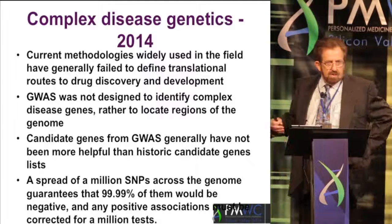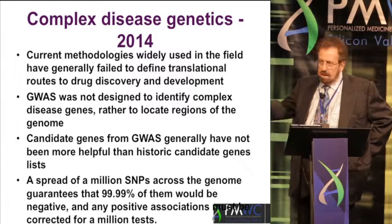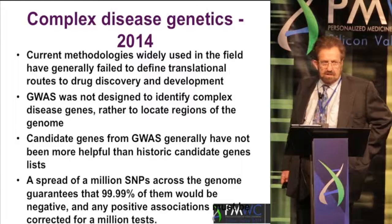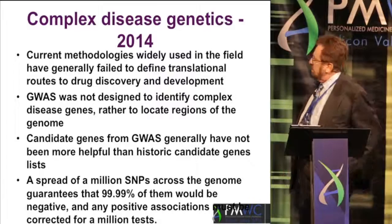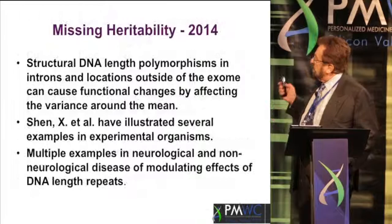People have used things like GWAS and a number of other approaches, and every week you read another 10, 15, 20 candidate genes that might be related based on statistical analysis of a million SNPs across the genome, where only three or four of those SNPs would give you any information — over 99.9% of them would not.